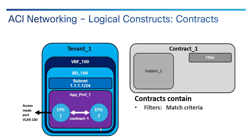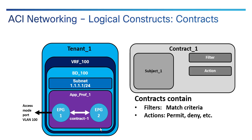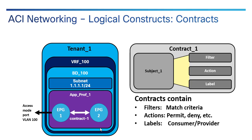Contracts are similar in that they contain what are called filters. A filter is very much like an access list control entry — an ACE — specifying what protocol, port ranges, and things like that. One thing you can't use a contract for is filtering on IP ranges like access lists do. Then you have actions: permit, deny, and mark, though permit and deny are the most common. There's also something called labels with consumer and provider. Filters, actions, and labels live inside a container called a subject, and the subject lives inside the contract. You can have multiple subjects and multiple filters, and this is the criteria used to determine whether traffic goes between EPG1 and EPG2.